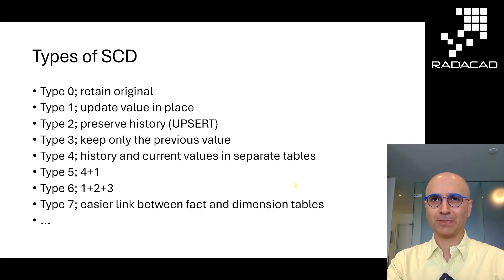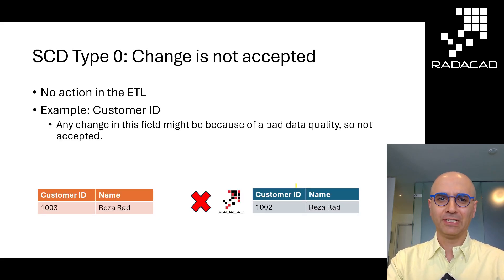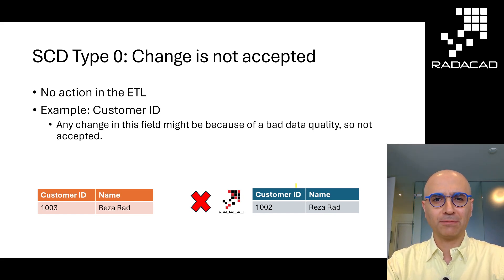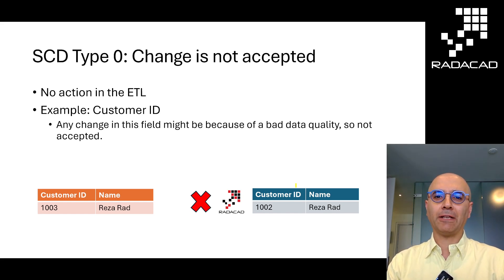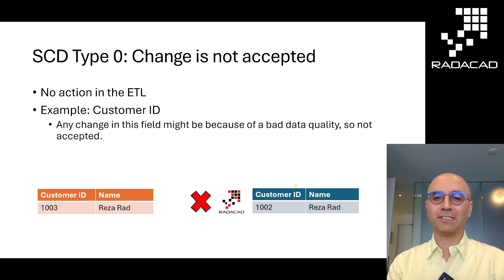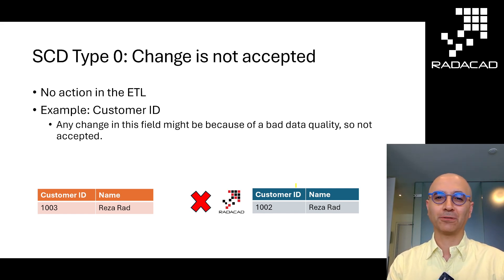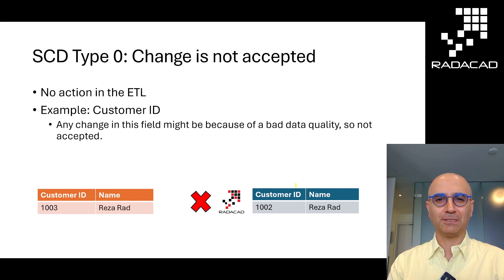So let's go into that and I'll talk about the most common ones. The first type — SCD Type 0 — means that you don't accept the change. Sometimes there is a column, a field, where the value is not expected to change, like customer number or customer ID, and you build everything based on that. If there is a change, that probably means there is bad quality data in the source system or there is a problem that has to be investigated. So basically you don't accept the change. This is the most simple type of SCD because you don't really do anything.